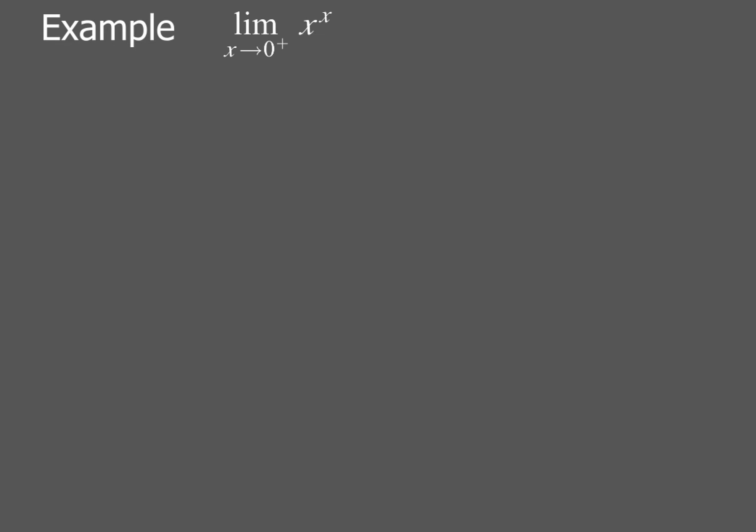So here we go. We're going to have this limit as x goes to 0 from the right-hand side, that's what the little plus means, of the function x to the x power. Now when we plug in 0 from the right-hand side, that's going to give us this form of 0 to the 0 power. That's one of our other indeterminate forms. So what we're going to do to solve this problem is manipulate it to get it into the form of either 0 over 0 or infinity over infinity.